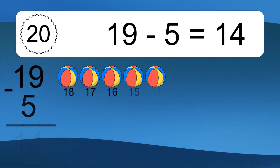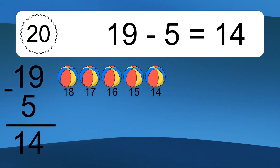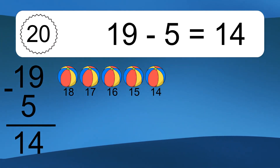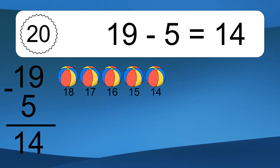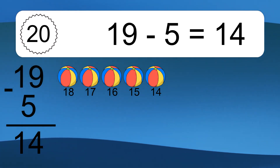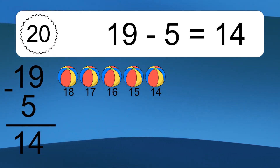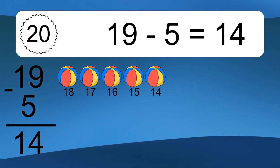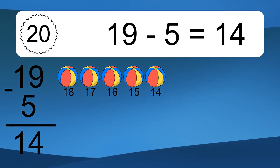Nineteen minus five equals what? Nineteen minus five equals fourteen. Let's count it: eighteen, seventeen, sixteen, fifteen, fourteen.